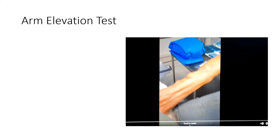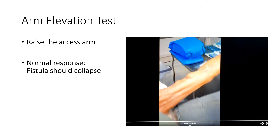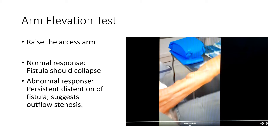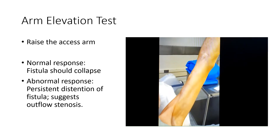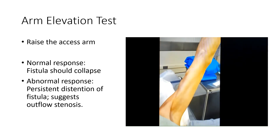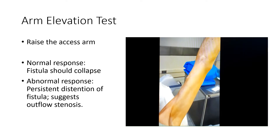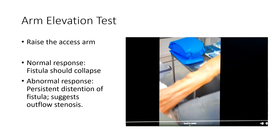Another way to evaluate for stenosis is the arm elevation test. Ask the patient to raise the access arm — normally, gravity will hasten drainage of blood from the arm and the fistula should collapse. If there is persistent distention of the fistula, this suggests an outflow stenosis preventing the fistula from draining. When the arm is raised the fistula should collapse, and reconstitute when the arm is lowered.